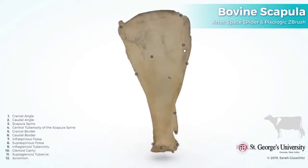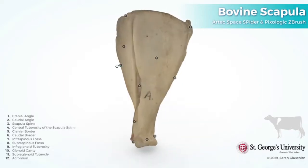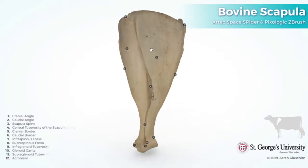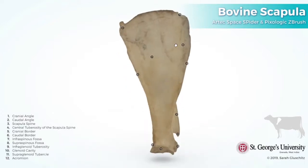First, surfaces. There are two surfaces in the scapula bone: the medial surface, which is facing toward the body, and the lateral surface, which is facing away from the body.